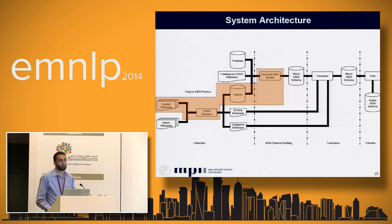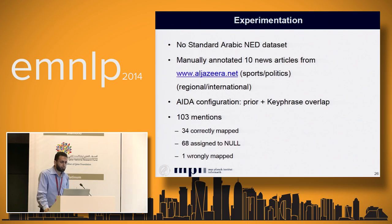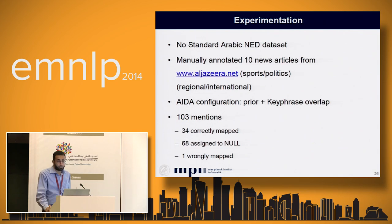After translation, what can be translated is translated; what cannot stays in English and is filtered out to produce a pure Arabic AIDA schema. To our knowledge there is no standard NED dataset for Arabic, so we manually annotated 10 snippets of news articles from the Al Jazeera website covering sports, politics, and regional and international news. We configured the system to use just prior and key phrase overlap to assess quality. This is very much a work in progress. We had slightly over 100 mentions; AIDA Arabic was able to correctly map 34 of them.